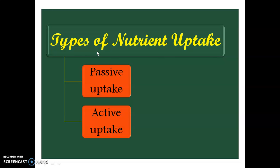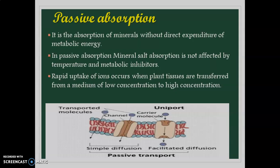Types of nutrient uptake. There are mainly two types of nutrient uptake: passive uptake and active uptake. Passive uptake, as the name suggests, means no need of energy. Active uptake involves the expenditure of energy for the uptake of minerals or nutrients from the soil into the plant.